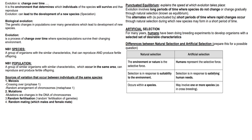Evolution — this section is usually between 50 and 60 marks, so let's say 55 marks give or take. Evolution is change over time, and it is the environment that determines which individuals of the species will survive and then reproduce. Biological evolution refers to the genetic changes in populations over many generations which lead to new species — this lays a foundation for evolution and Darwinism.